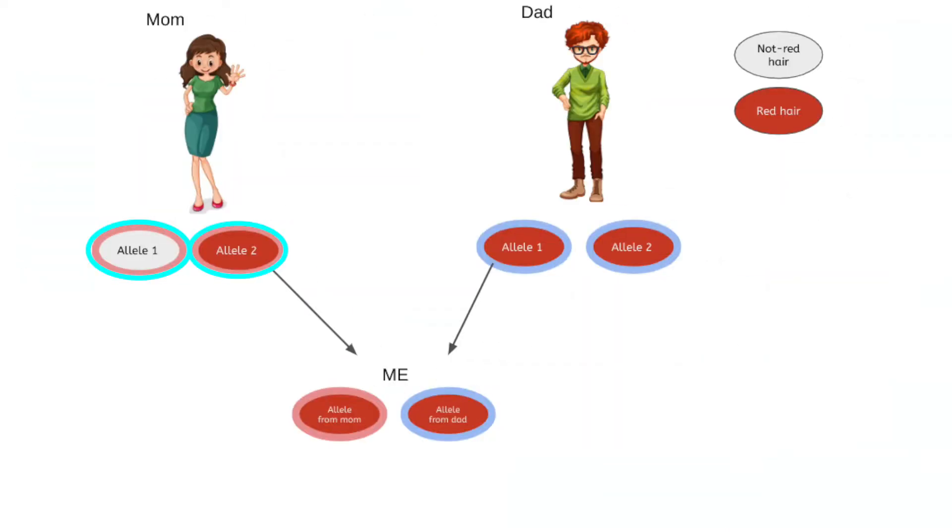In the example we looked at earlier, mom was a carrier because she had a red hair allele but did not have red hair herself. If you have a child, one of your two alleles will get passed on. If you are a carrier, it could either be the dominant or recessive one — it's a 50-50 shot. And if both parents are carriers, there is a one in four chance that both will pass on the recessive allele, giving their child a recessive trait that neither parent has.